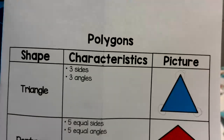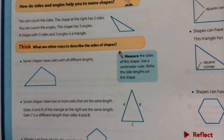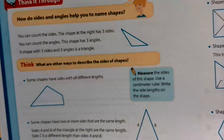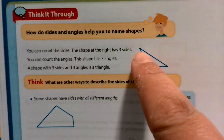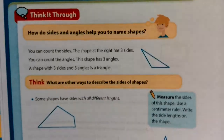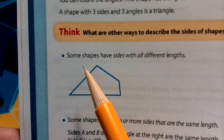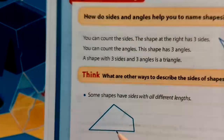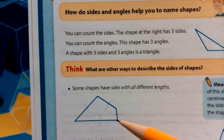Your work assigned today has to do with putting your shapes together based on their attributes, so you'll be grouping them. A way that we can group our shapes and name them is by counting the number of sides or the angles. Sometimes all the sides can be different lengths but it can still have a name. For example, this shape has one, two, three, four sides, so it is a quadrilateral.